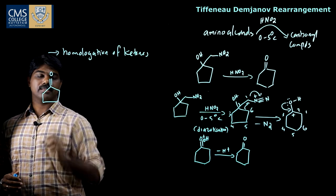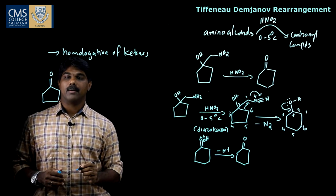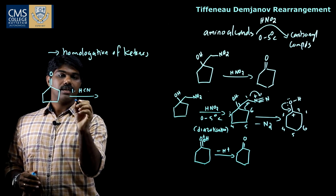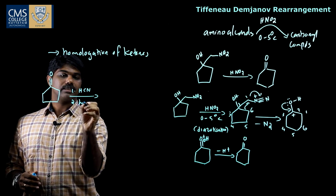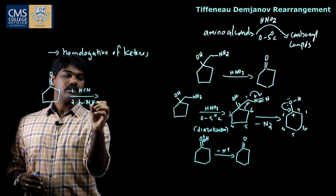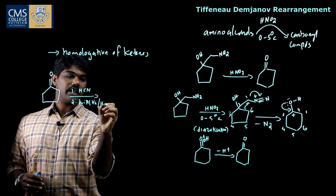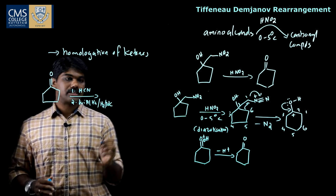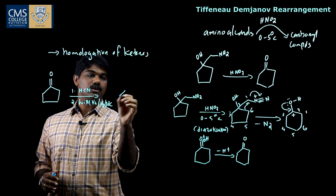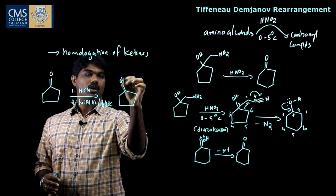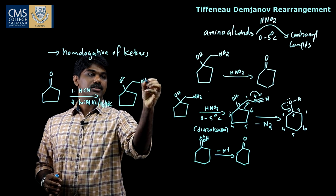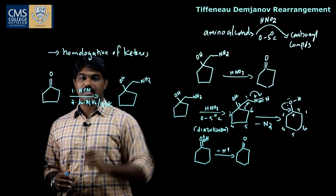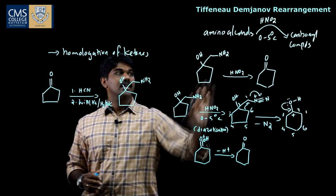For example, if you have a carbonyl compound like cyclopentanone, first it reacts with hydrogen cyanide (HCN), followed by reduction using lithium aluminum hydride or hydrogen in the presence of palladium on carbon. This reaction leads to the formation of an amino alcohol with an OH and NH2 group.